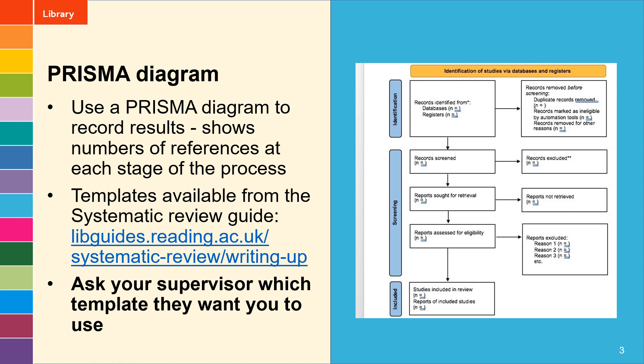The final two boxes record the results of looking at the full text. The ones that you exclude you would list in the box on the right, and you need to give reasons at this stage. For instance, if I was only looking for randomized controlled trial studies and one was not that type of study, I could exclude it — so reason one would be 'not an RCT' — and I would record the total number of references I excluded for that reason in the box on the right at the bottom.